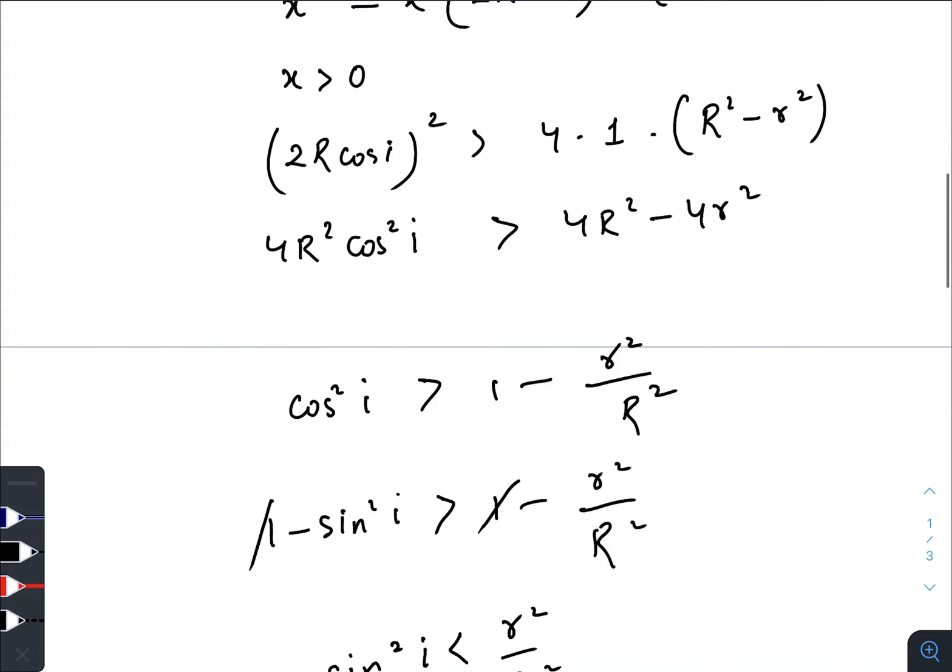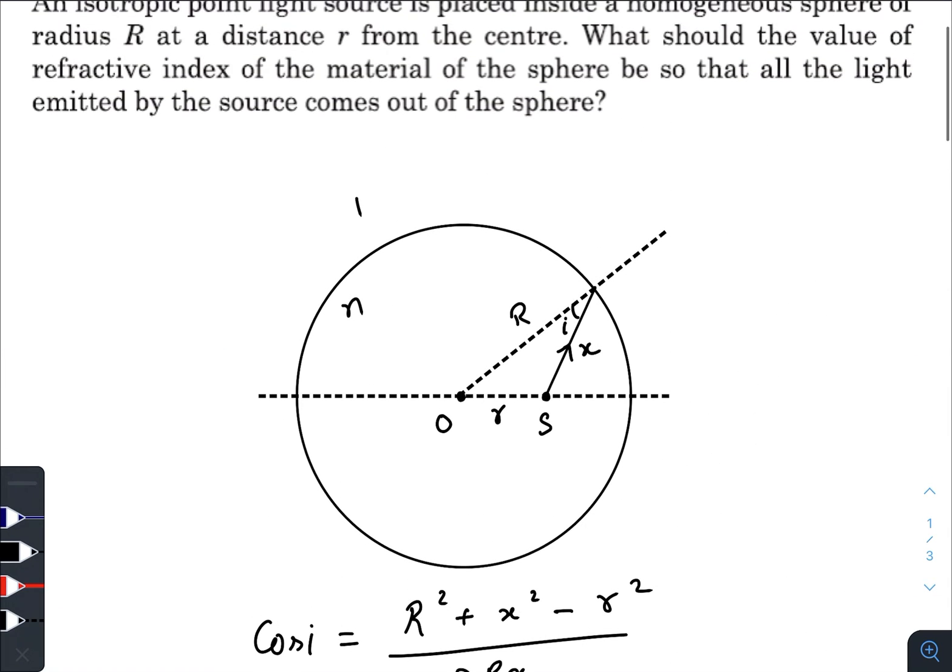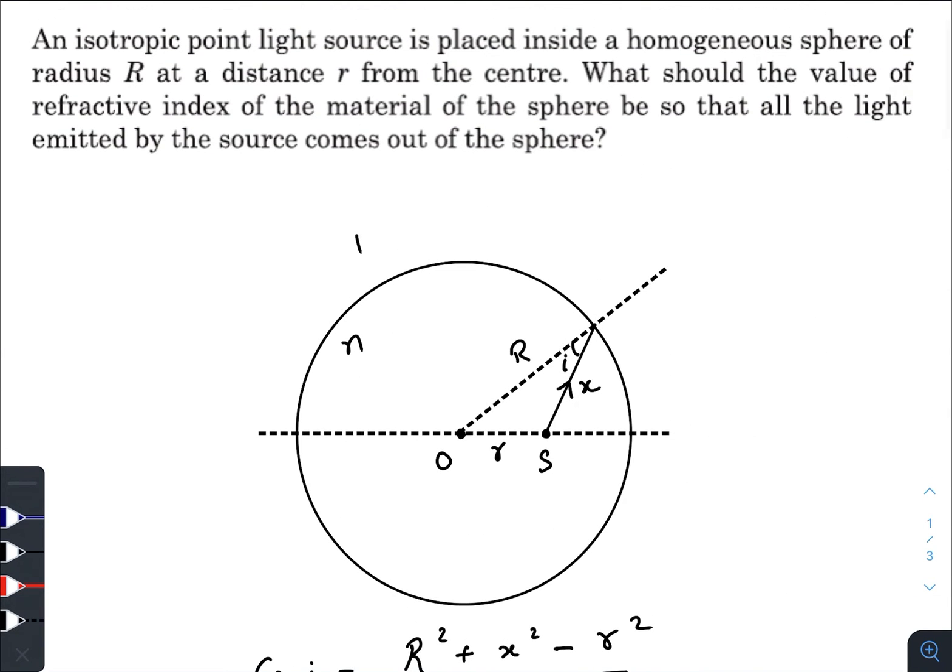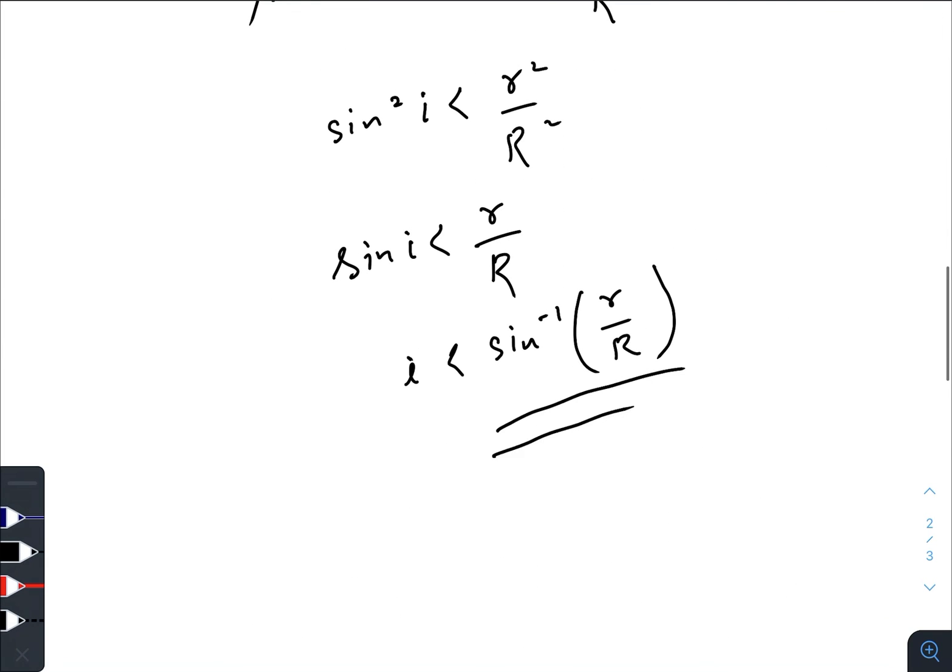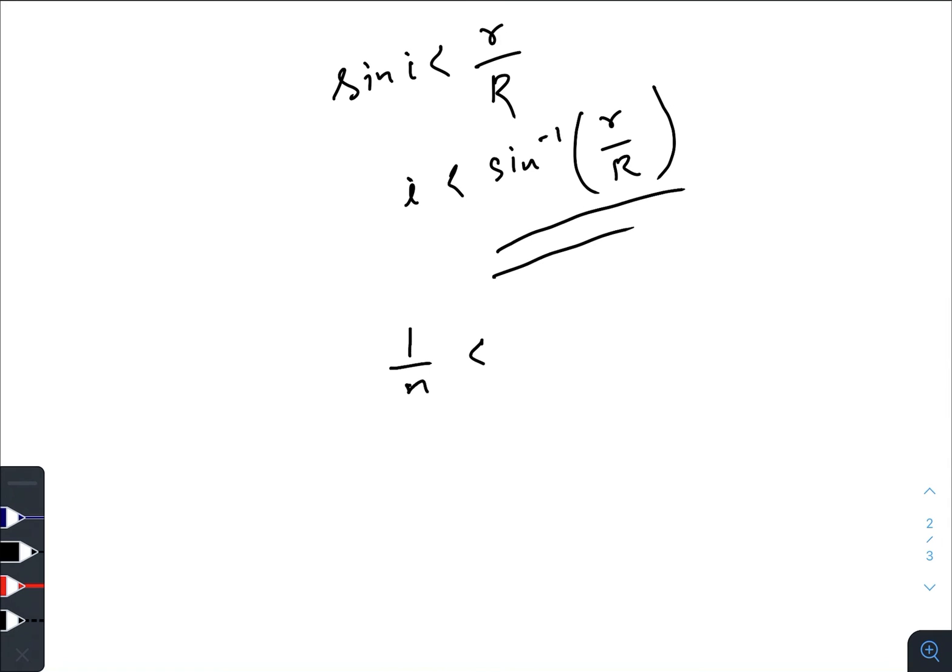Now, what we know is that in the question they have asked that all the light comes out of the sphere. That means all the possible values of i must be less than the critical angle. Now, how will we find the critical angle? We know that n sin iₒ equals 1, so iₒ equals sin inverse 1/n. If we compare this one with this one, 1/n must be less than r/R.